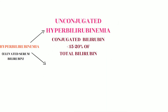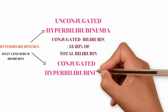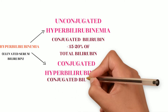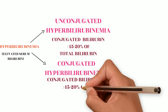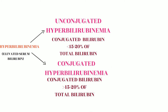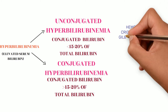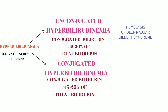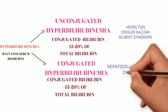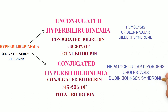Or it could be conjugated hyperbilirubinemia, where conjugated bilirubin is more than 15 to 20 percent of total bilirubin. Causes of unconjugated hyperbilirubinemia are hemolysis and genetic conditions like Crigler-Najjar syndrome and Gilbert syndrome. Causes of conjugated hyperbilirubinemia are hepatocellular disorders, cholestasis, and genetic conditions like Dubin-Johnson syndrome and Rotor syndrome.